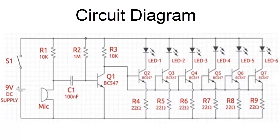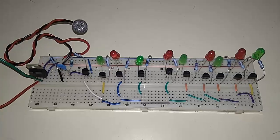The signal is fed into the transistor, and the transistor further amplifies the signal for each and every LED. This is a breadboard assembled circuit.